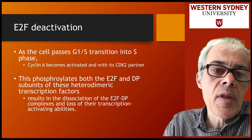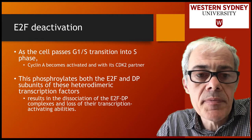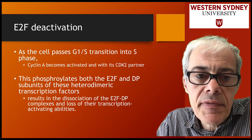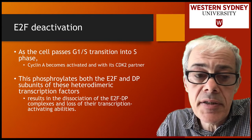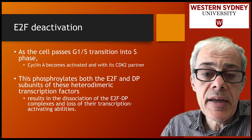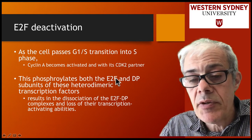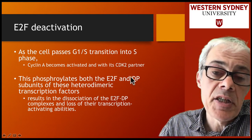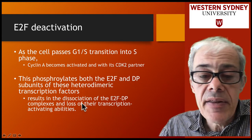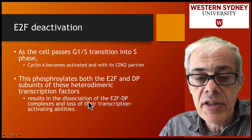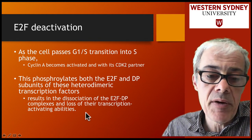As cells transit the restriction point, other cyclins become active and activate additional cyclin-dependent kinases. This leads to phosphorylation of the E2F transcription factor and its partner, resulting in their dissociation and subsequent breakdown by the cell.